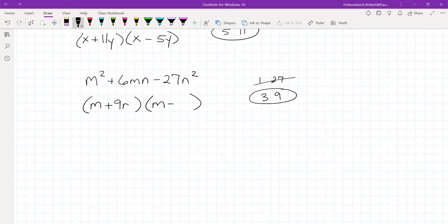So it's going to be 9n and negative 3n. So m plus 9n times m minus 3n are the factors for m squared plus 6mn minus 27n squared.